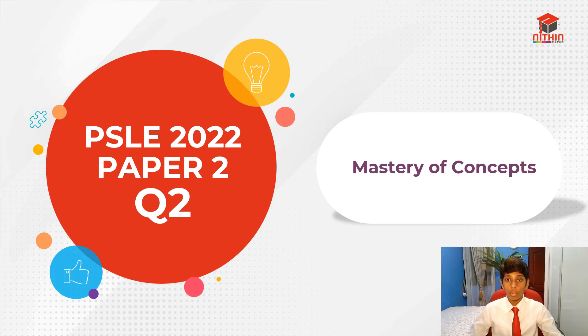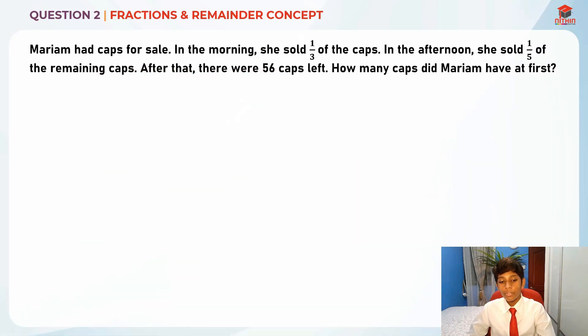The question tests us on fractions and the remainder concept. Let's read the question first. Mariam had caps for sale. In the morning she sold one third of the caps. This is important information so let's highlight it.